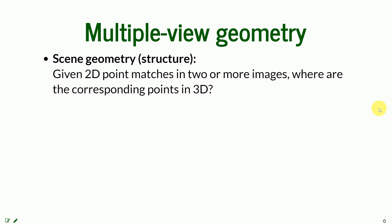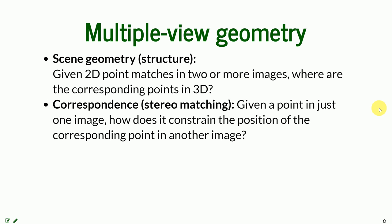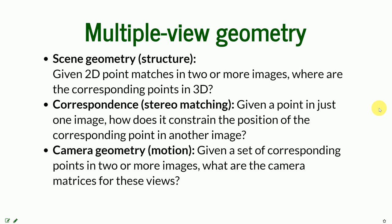There are multiple questions that need to be asked before we do it. First, given matches on two or more images, where is the location of that point in three-dimensional space? Then stereo matching: if we have a point in just one image, how does it constrain the position of the corresponding point in another image? And regarding camera geometry: if we know the set of corresponding points on two or more images, how can we recover the camera matrices for those views and estimate camera distortions based on the corresponding points?